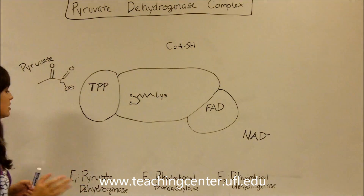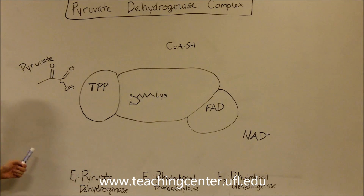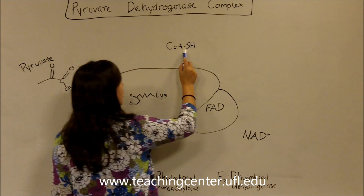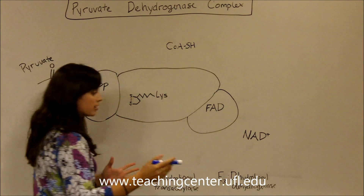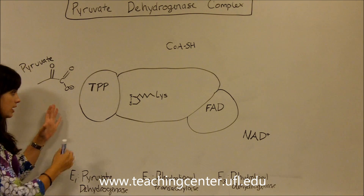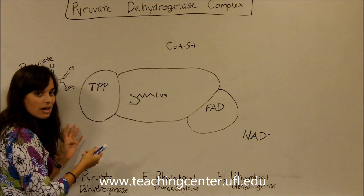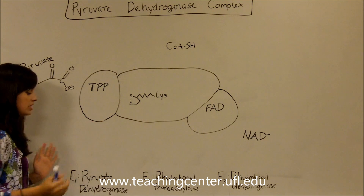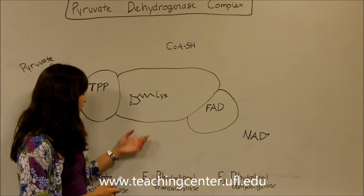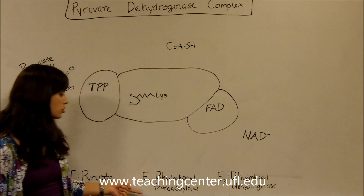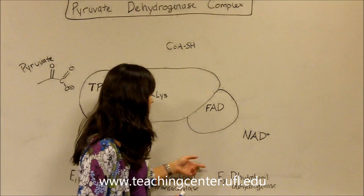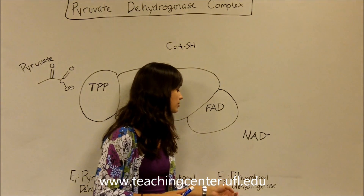To get started, let me orient you to our drawing. This right here is the pyruvate dehydrogenase complex. Pyruvate, CoA, and NAD+ are all floating around readily available. The first enzyme, called E1, is known as pyruvate dehydrogenase. The second one, E2, is dihydrolipoyl transacetylase. And the third one, E3, is dihydrolipoyl dehydrogenase. We'll talk about why these are named the way they are.